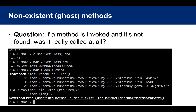Here's a philosophical question: if a method is invoked and it's not found, was it really called at all? But seriously, let's take a look at this example. We have some class, and you have an instance of that class called bar, but no methods defined in the class. So then you say bar.i_dont_exist. It's kind of obvious what's going to happen — we never defined the i_dont_exist method, so it's going to fail. The error you get is NoMethodError: undefined method i_dont_exist.